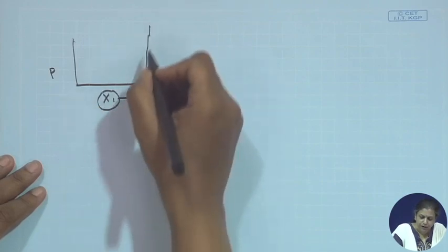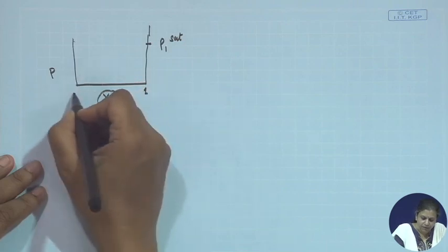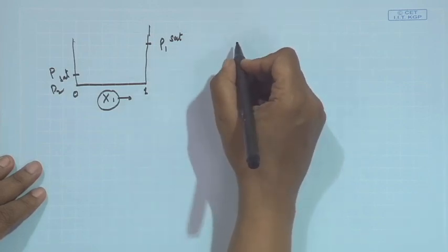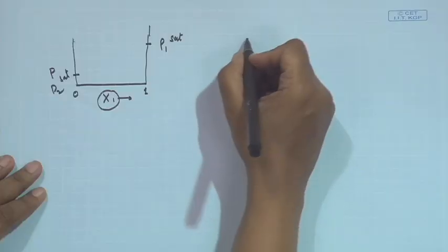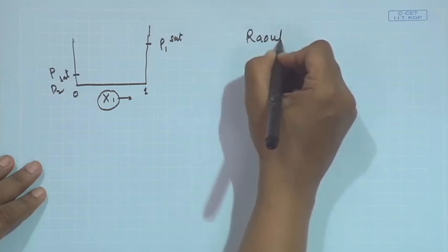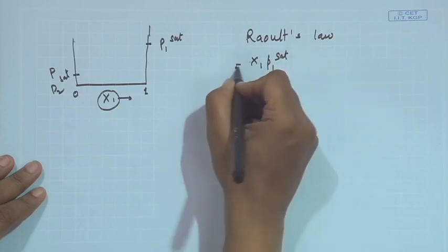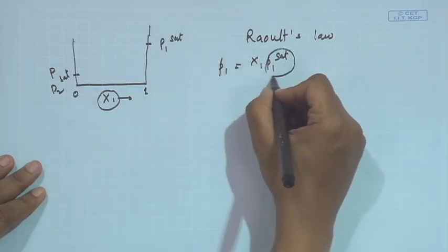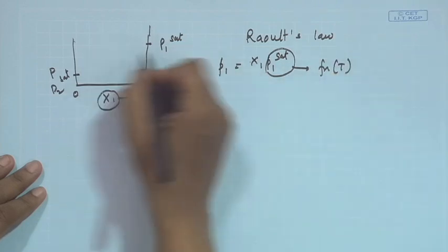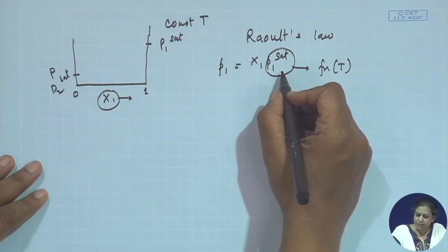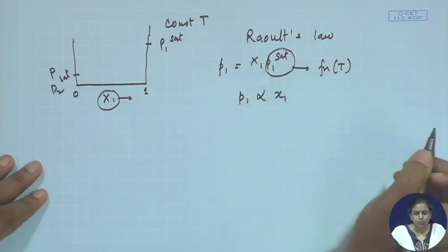At x₁ equals one, this is p₁ saturated; and for x₁ equals zero, this is p₂ saturated. For ideal solutions, Raoult's law is just the Lewis-Randall rule for low to moderate pressure where the fugacity term can be replaced by pressure. So Raoult's law gives p₁ equals x₁ p₁ saturated. Since p₁ saturated is a function of temperature and this plot is done under constant temperature conditions, p₁ saturated becomes fixed, and as a result p₁ is proportional to x₁.